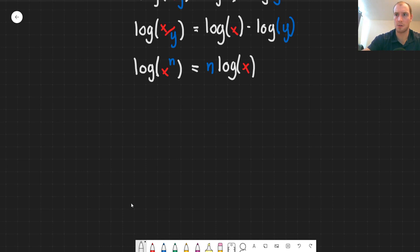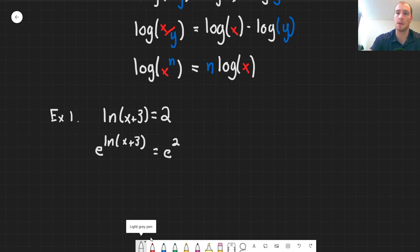So now a couple examples here. For example one for logarithms, we have ln of x plus three is equal to two. So first we're going to get rid of this logarithm. So we're going to apply the inverse. So this is e to the ln x plus three is equal to e to the two, where we have to raise both sides to the power of e. So this will cancel out the e with the logarithm there. And this will leave us with x plus three is equal to seven point three nine. And now solving for x, subtracting three from both sides, we're left with x is equal to four point three nine.